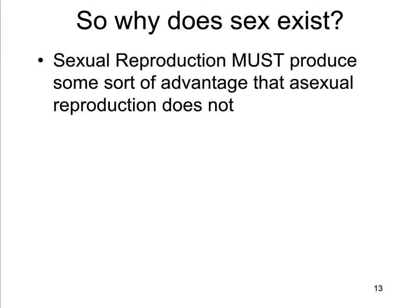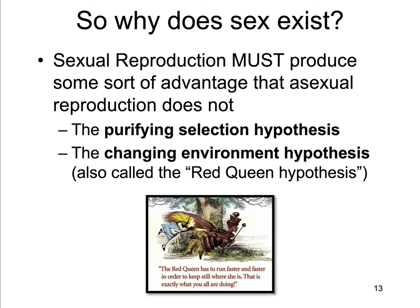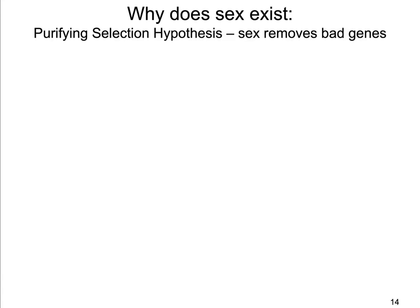Sex must produce some sort of advantage that asexual reproduction does not. There are two major hypotheses for why sex exists or why sex evolved. One is called the purifying selection hypothesis. The other is called the changing environment hypothesis, also known as the red queen hypothesis. Let's start with the purifying selection hypothesis.